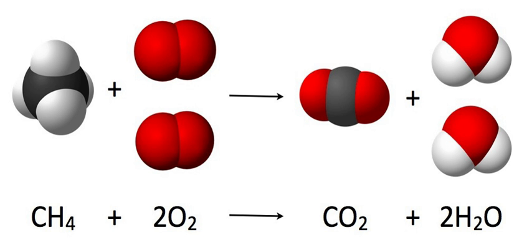As an example, seen in the above image, the burning of methane would be balanced by putting a coefficient of 1 before the CH4. Since there is one carbon on each side of the arrow, the first atom is balanced.